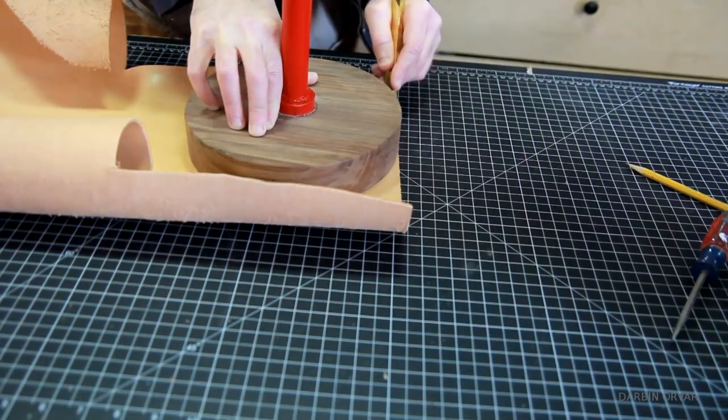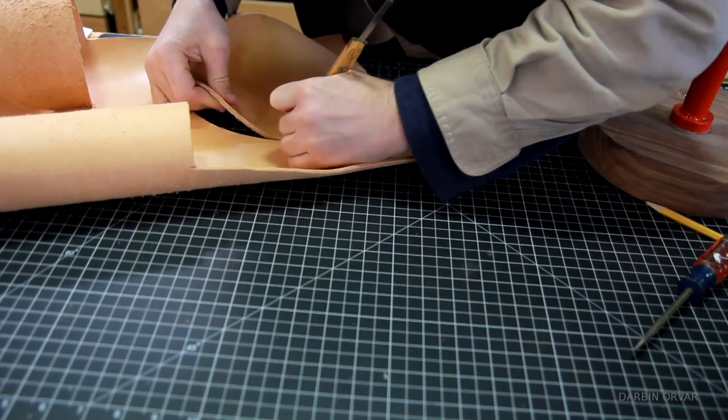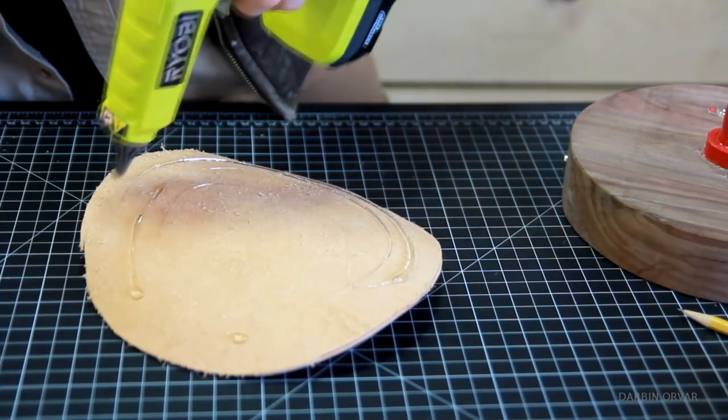To create a soft bottom and to hide the wires, using some nice veg tanned leather here. And just securing that with hot glue.